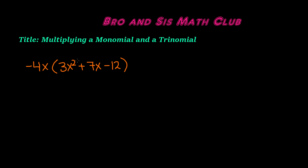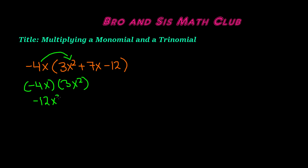So you have negative 4x times this trinomial. Let's go ahead and distribute negative 4x to each of the terms. First, we multiply negative 4x times 3x squared. Negative 4 times positive 3 gives you negative 12. And x times x squared gives you x cubed, or x to the power of 3 — because when you're multiplying exponents, you add the powers. So x to the power of 1 times x to the power of 2 gives you x to the power of 3, or x cubed.